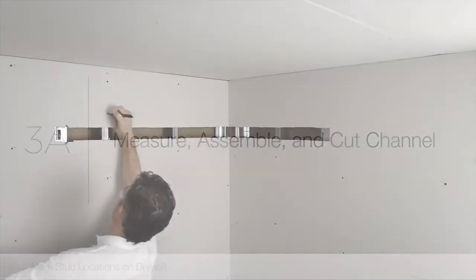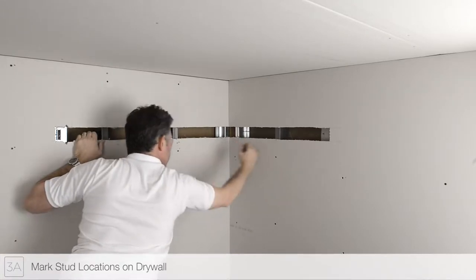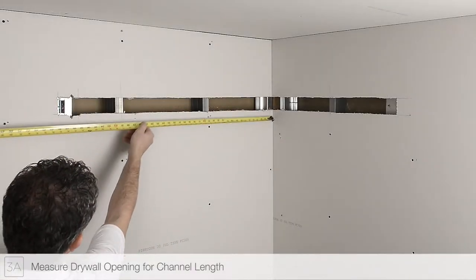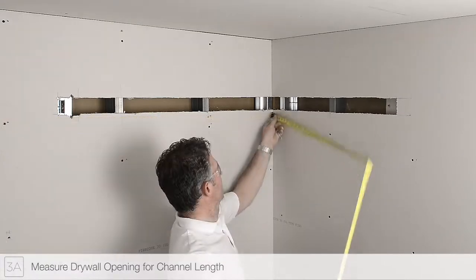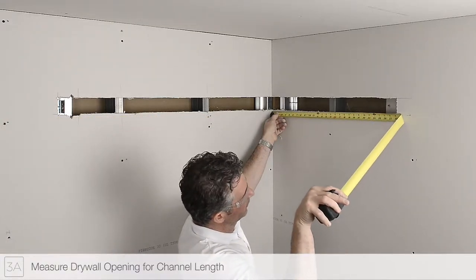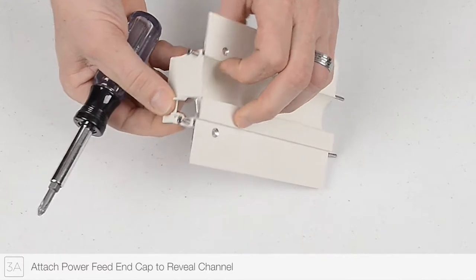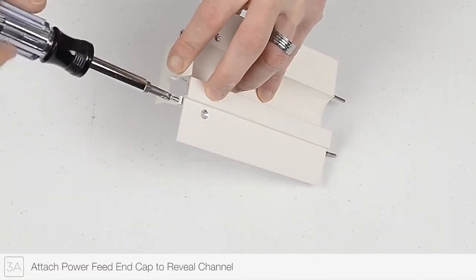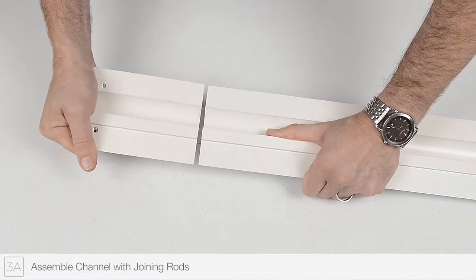Step 3A: Mark the stud and mounting strap locations. Measure drywall opening to determine the length of the channel needed. Attach the power feed cap to the channel end opposite the junction box. Use the joining rods to assemble the channel.